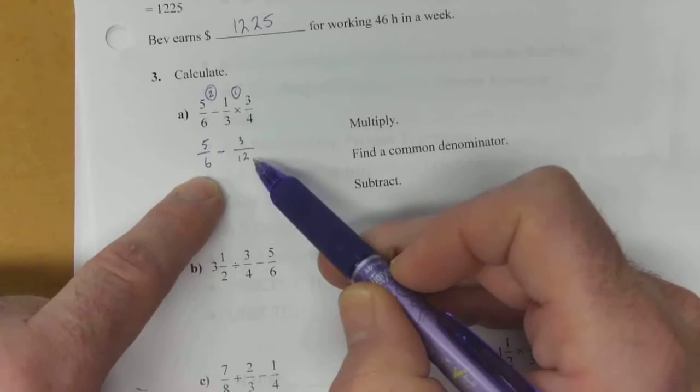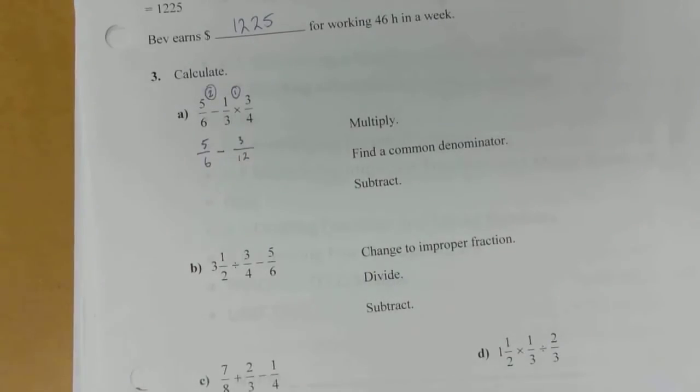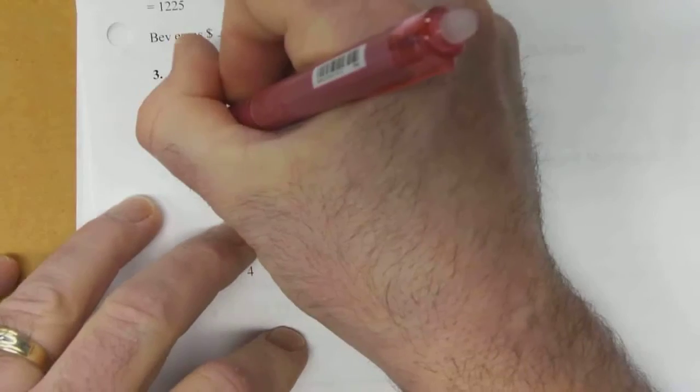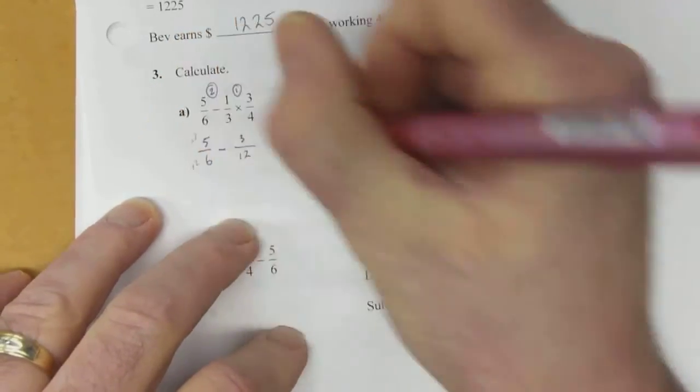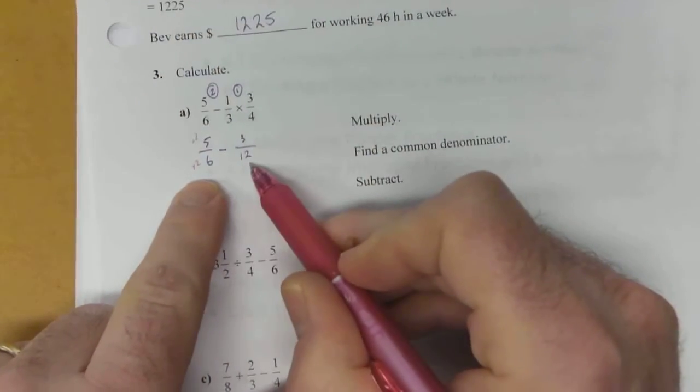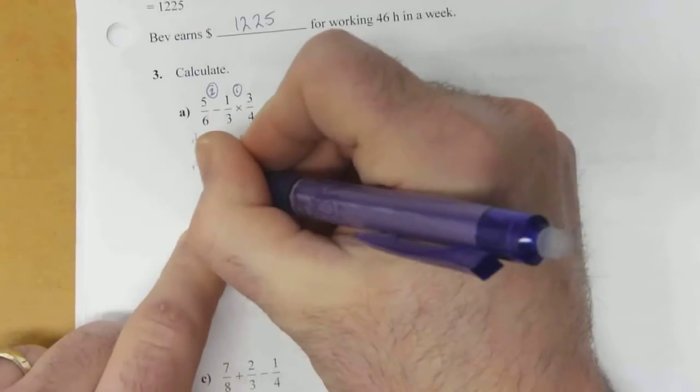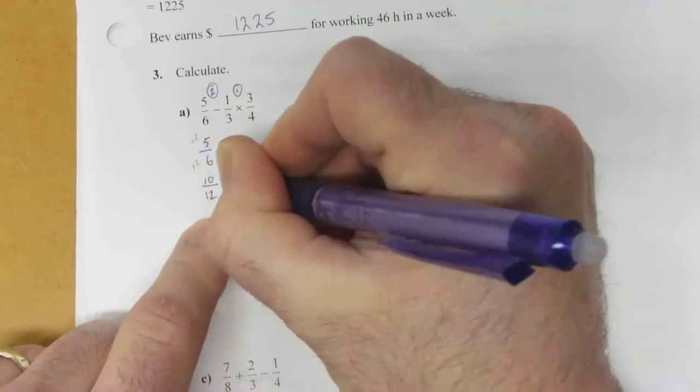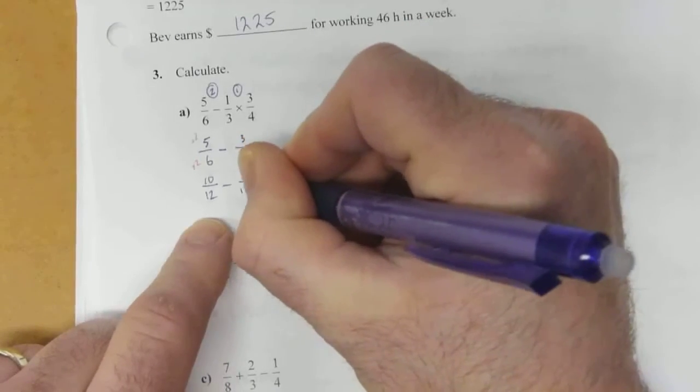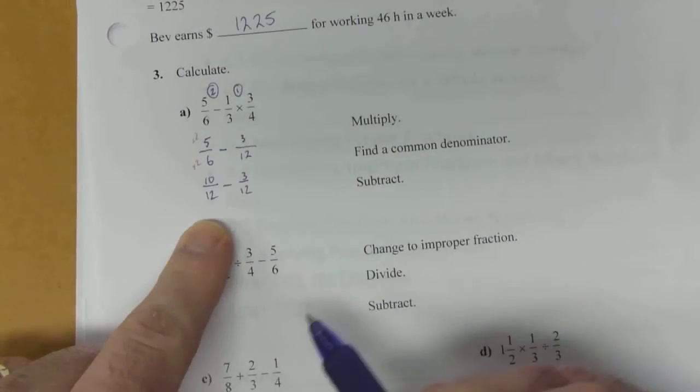So I'm going to multiply that by 2 and multiply that by 2 so that my bottom becomes a 12 like this 12. 5 times 2 is 10. 6 times 2 is 12.